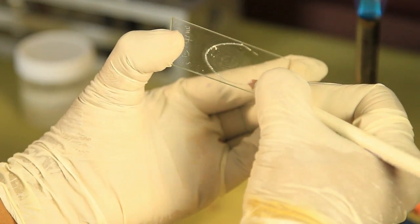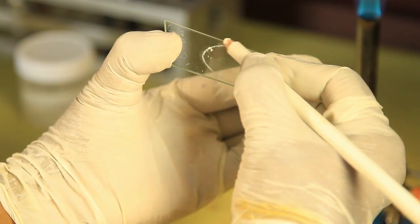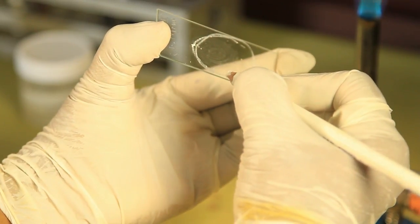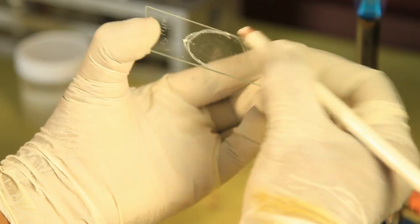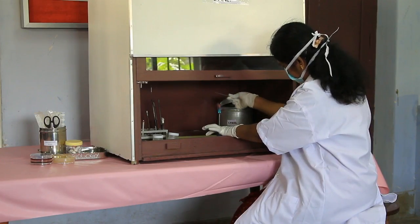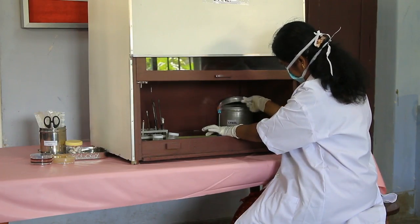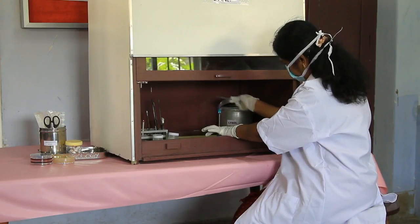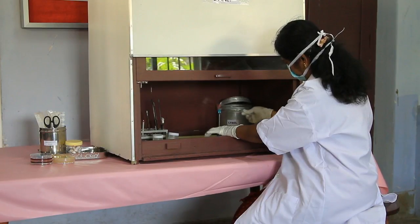Mark the position of the smear on the under surface of the slide with a glass marking pen or pencil. Heat fix the smear by passing over a flame for 2-3 seconds, taking care not to burn it.